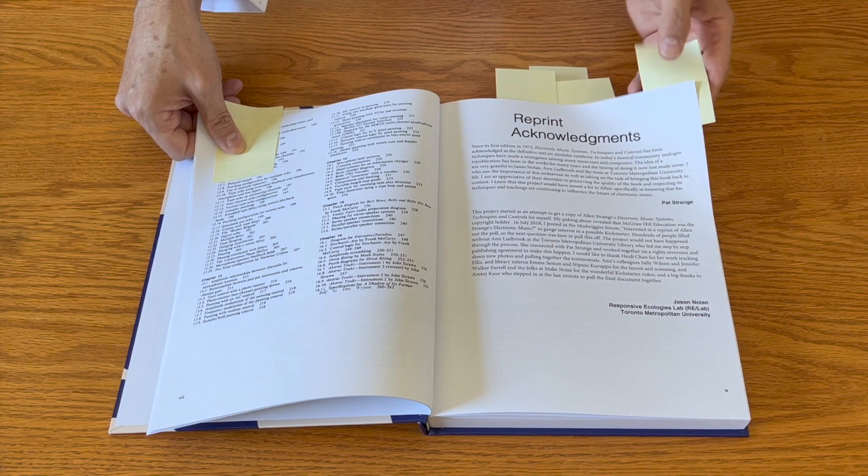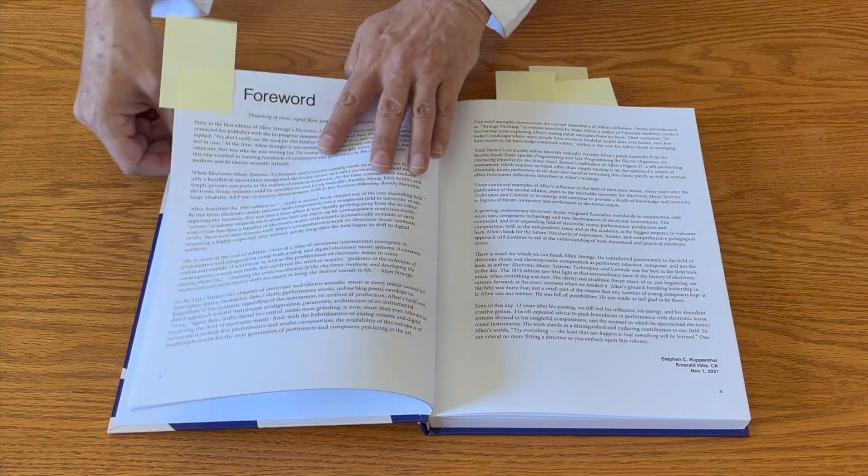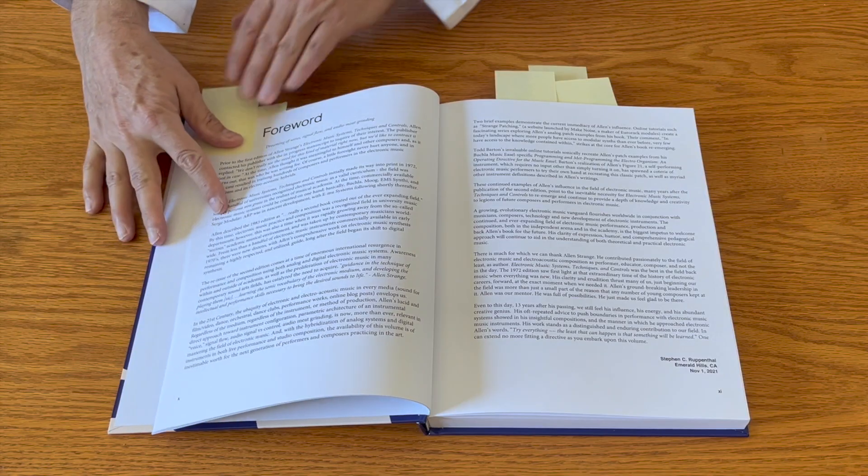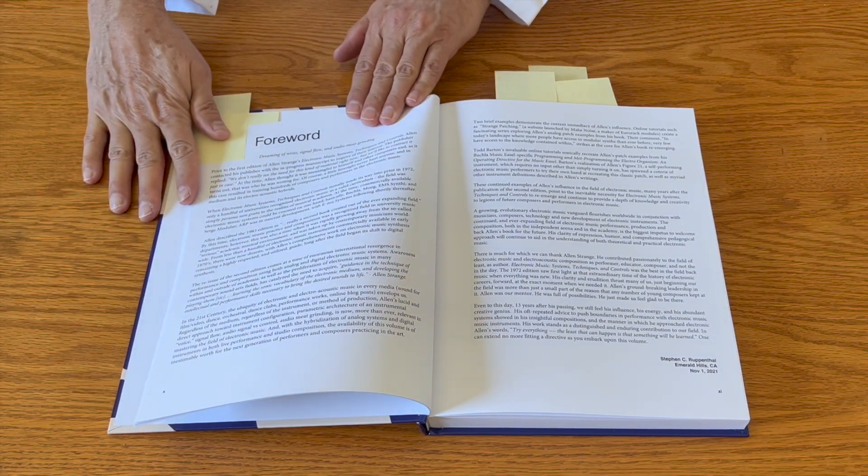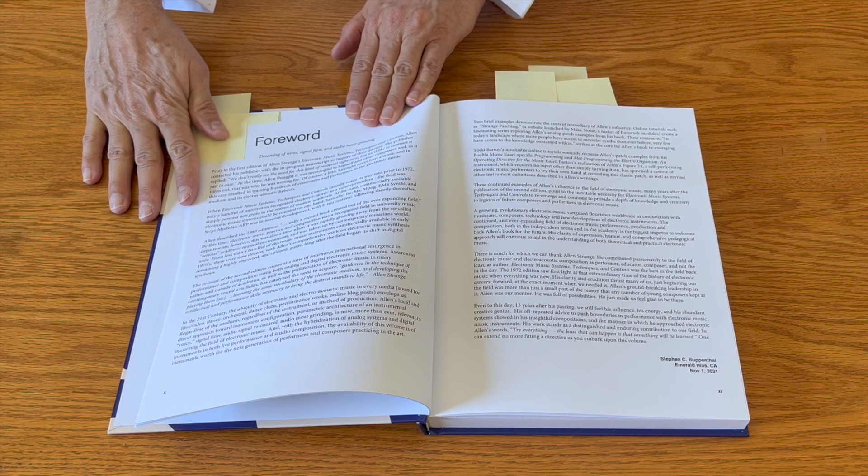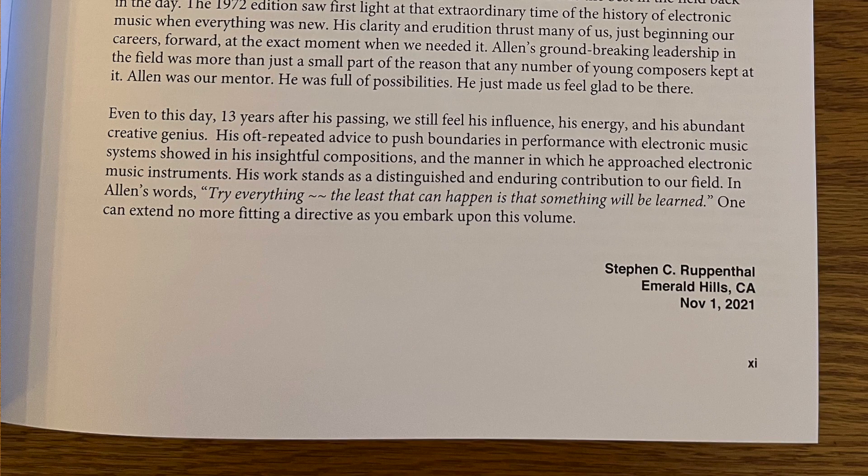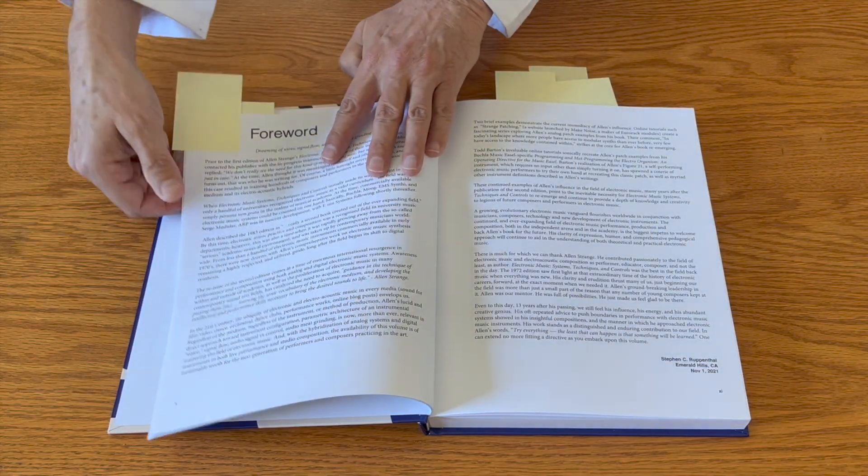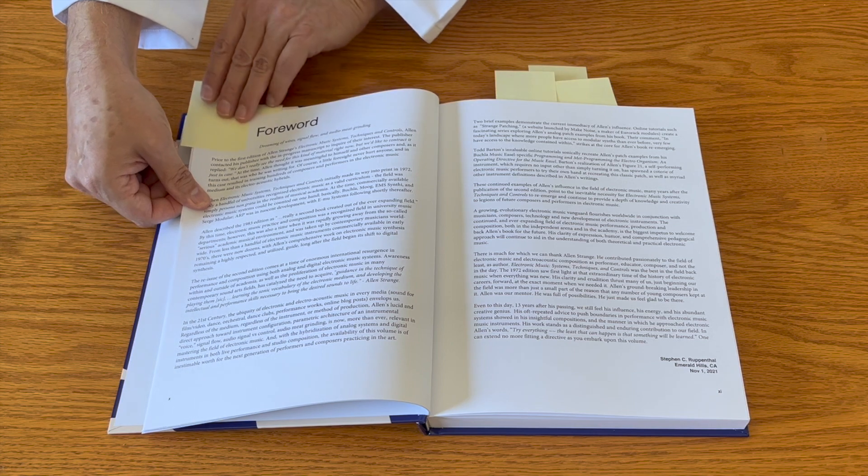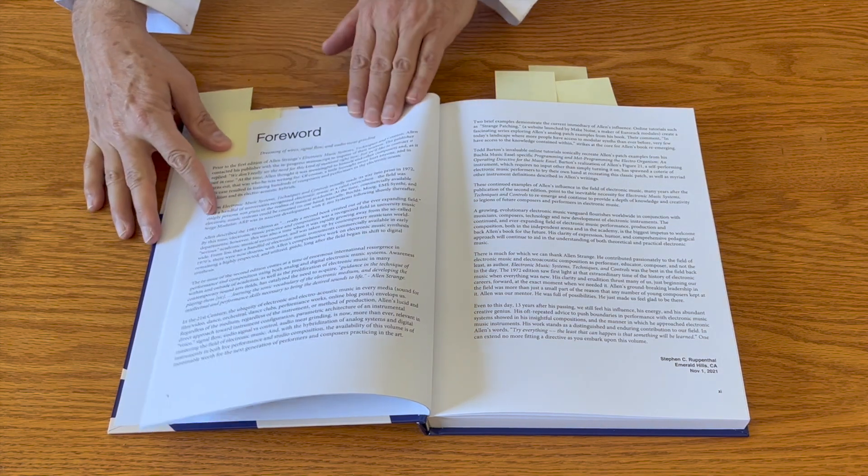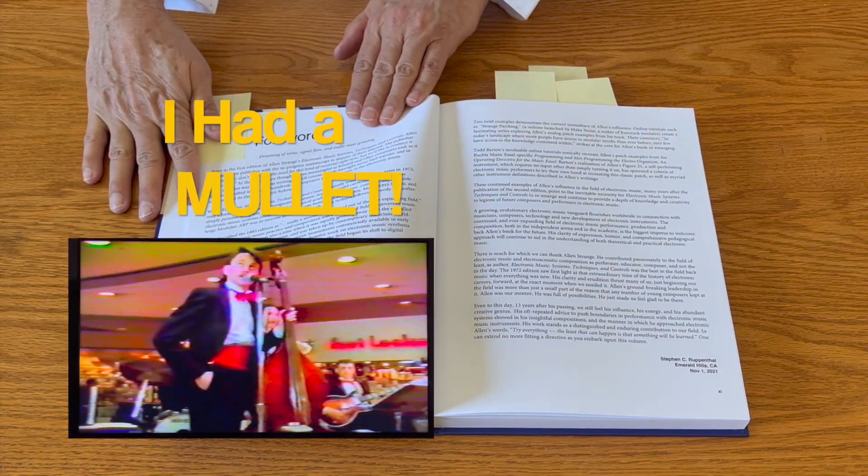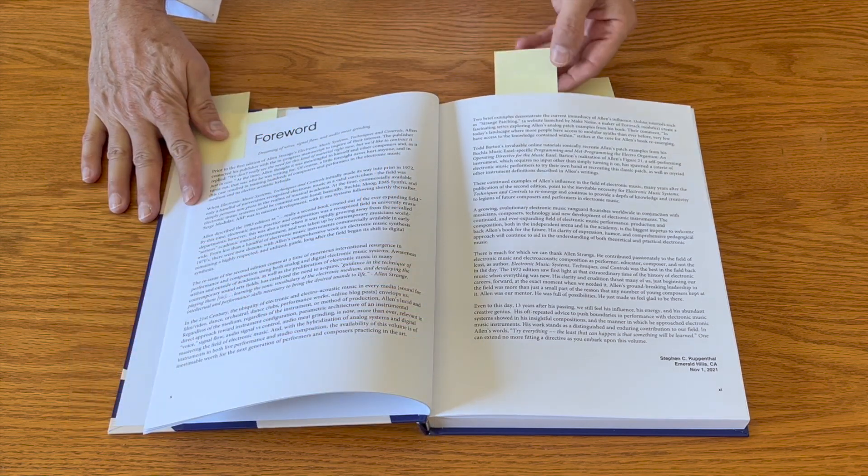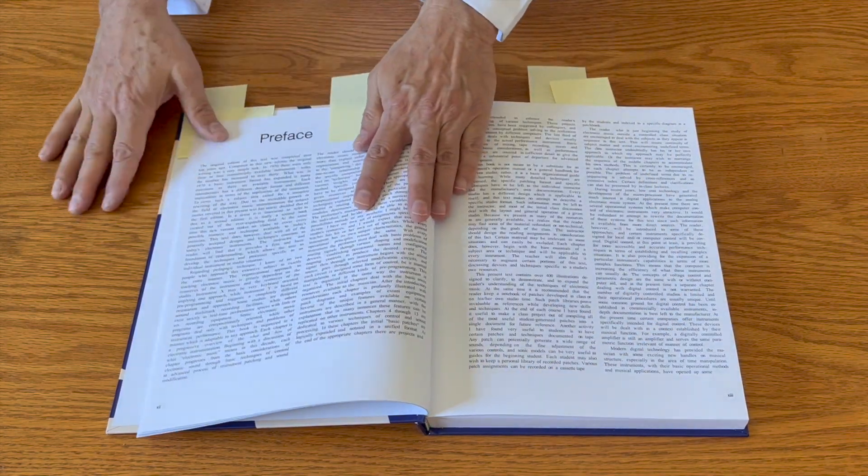Next we come to the foreword written by Steven Ruppenthal, and in it he really gives us a sense of what the early days of electronic music were like. Alan's original book, first published in 1972, served as a sort of manual for those entering the mysterious world of voltage controlled and modular synths. By 1983 when the second edition came out, I was a starry-eyed young composer, the first student to use a computer to make music in my university.